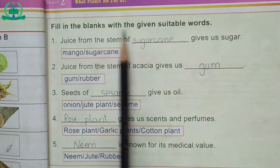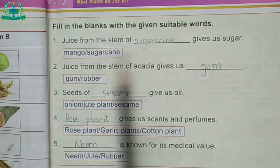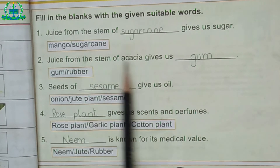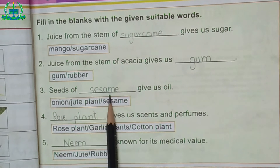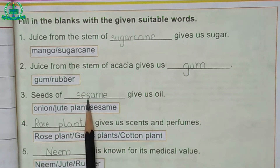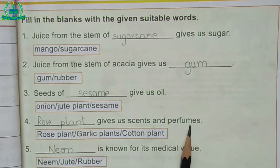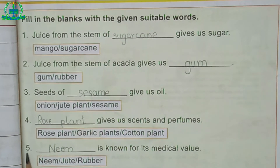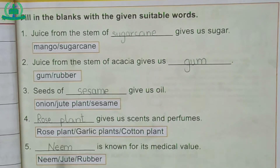Fill in the blanks with the given suitable words. Number 1: Juice from the stem of sugarcane gives us sugar — sugarcane is the suitable word. Number 2: Juice from the stems of acacia gives us gum — gum is the suitable word. Number 3: Seeds of sesame give us oil — sesame is the suitable word. Number 4: The rose plant gives us scents and perfumes — rose plant is the suitable word. Number 5: The neem tree is known for its medical value — neem is the suitable word.